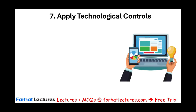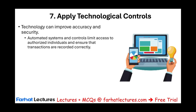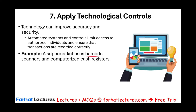Applying technological controls is a key principle. Technology can improve accuracy and security in many ways. For example, automated systems and controls limit access to authorized individuals only and ensure transactions are recorded properly. If you don't want someone to access a certain record, you can put it behind a password requiring proper authorization. A supermarket uses barcode scanners and computerized cash registers to improve accuracy and security — when you scan something, you know exactly what you're scanning and how much it's sold for.